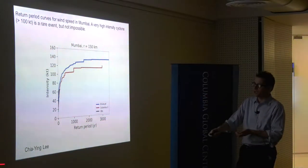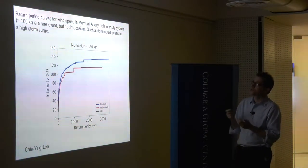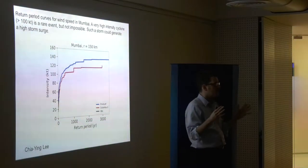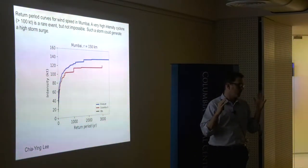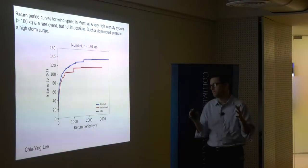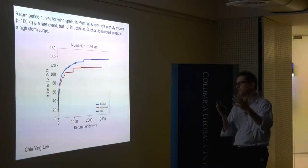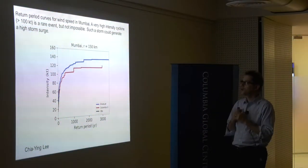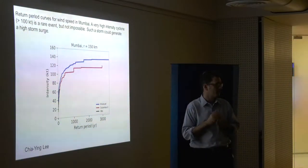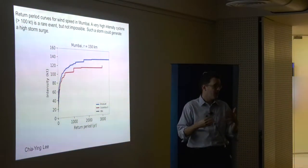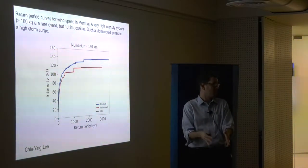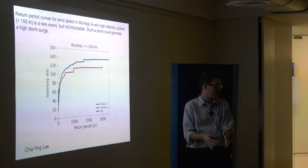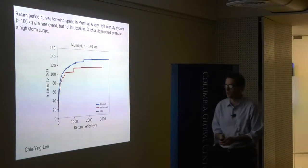A storm like this, if it came in at a bad angle or from a number of different directions, could produce a large storm surge — and if that coincided with high tide, could produce significant flooding across much of the city. I believe we are actually sitting on reclaimed land right now.